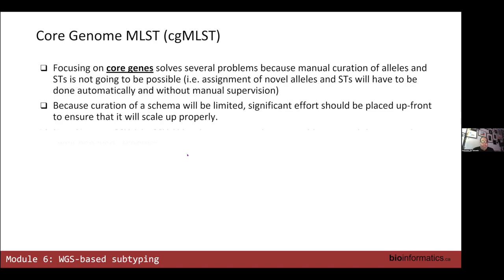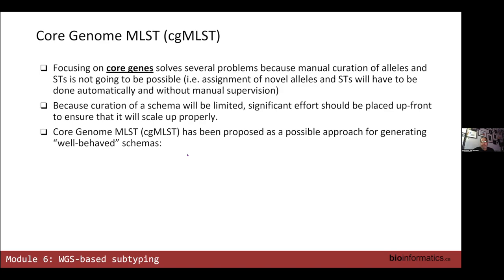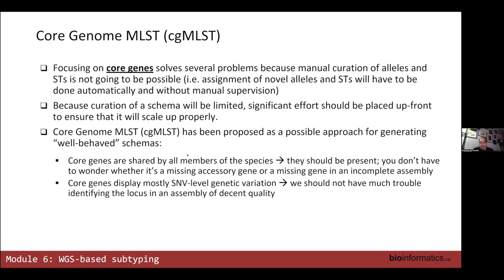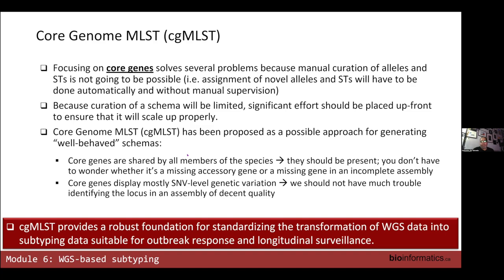cgMLST has been proposed as an approach because core genes are shared by all members of the species — so if you don't find them, something is wrong with your assembly. Most core genes evolve by acquisition of SNP-level variation, making them easier to find by homology searching, and length variation issues don't become too problematic. In terms of acting as a foundation for applying MLST to the genome scale, cgMLST is the way to go.